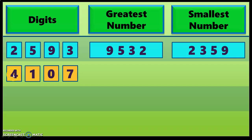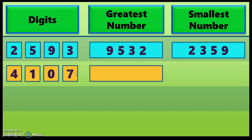Let us move on to the next example. Here we have digits 4, 1, 0 and 7. To form the greatest number, arrange from big to small. The biggest number is 7, so write down 7 first. Number 4 is smaller than 7, number 1 is lesser than 4, and the smallest number is 0. So the greatest number formed using these given four digits is 7410.